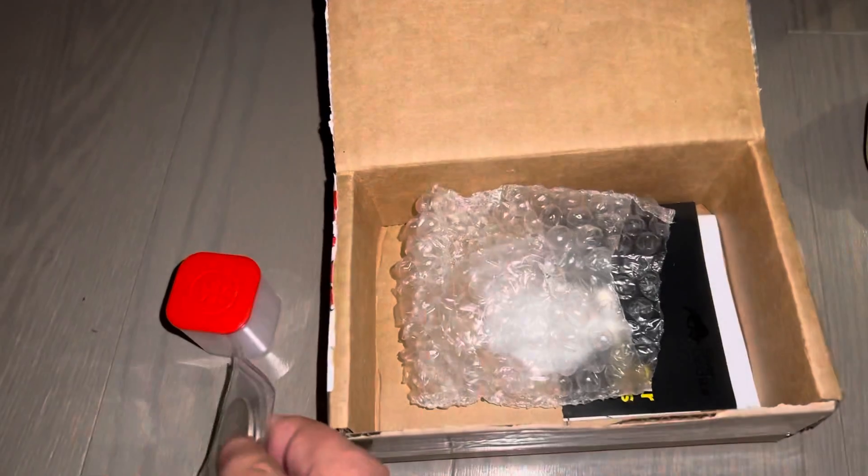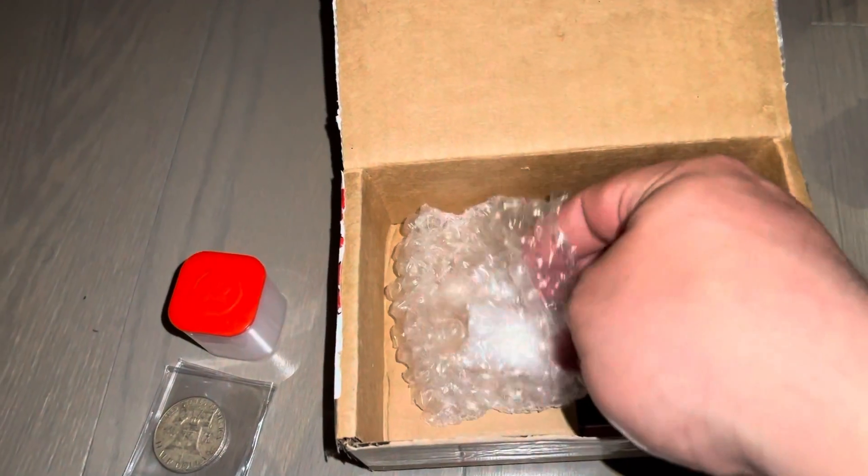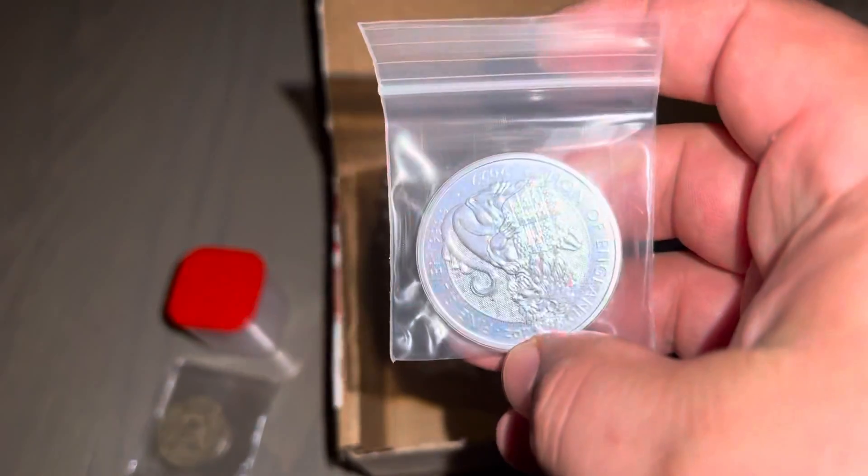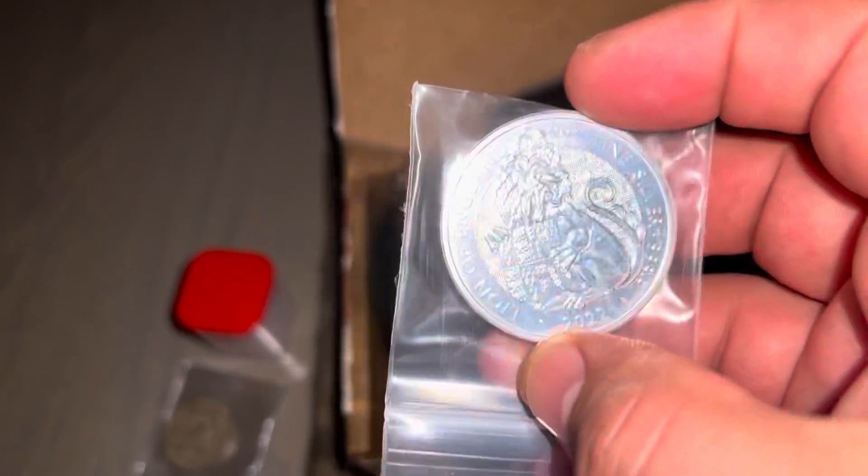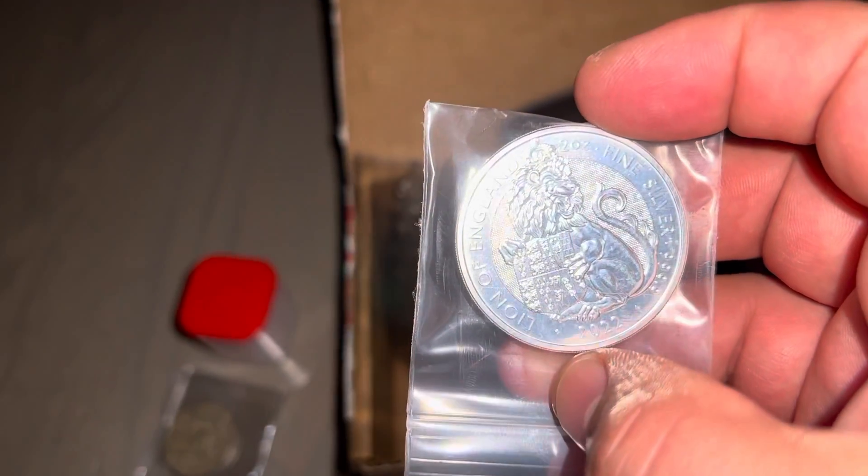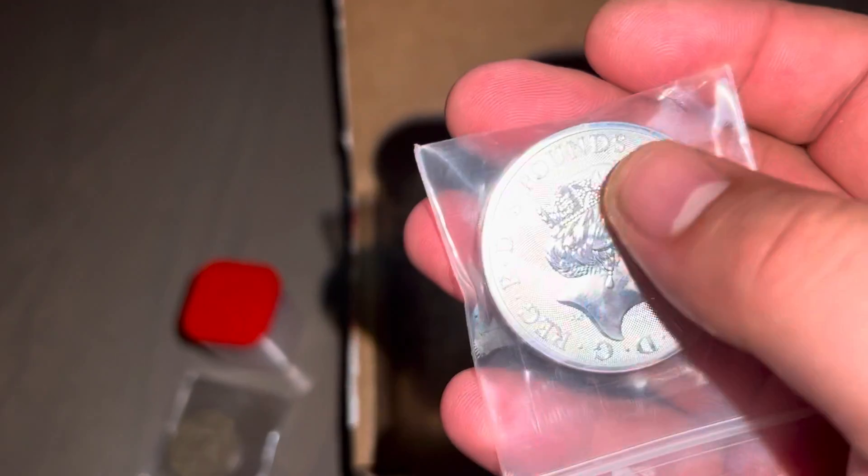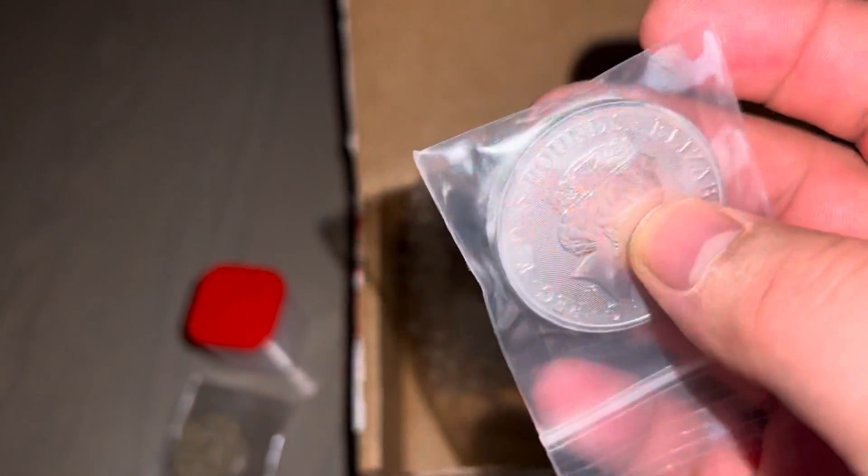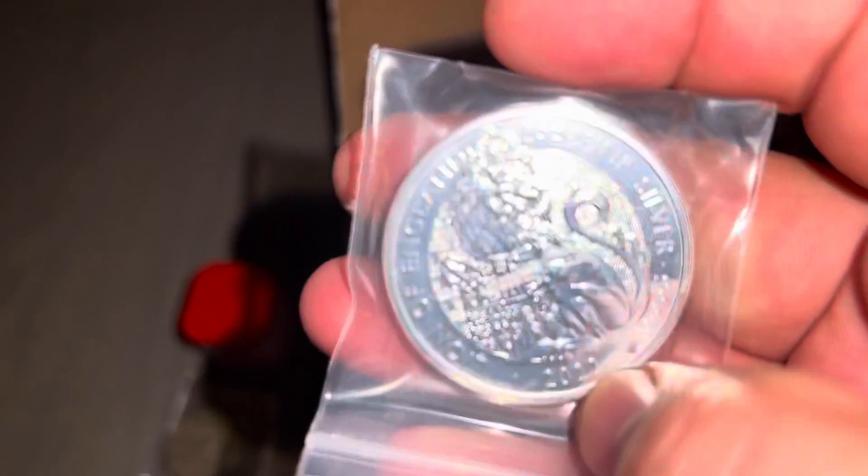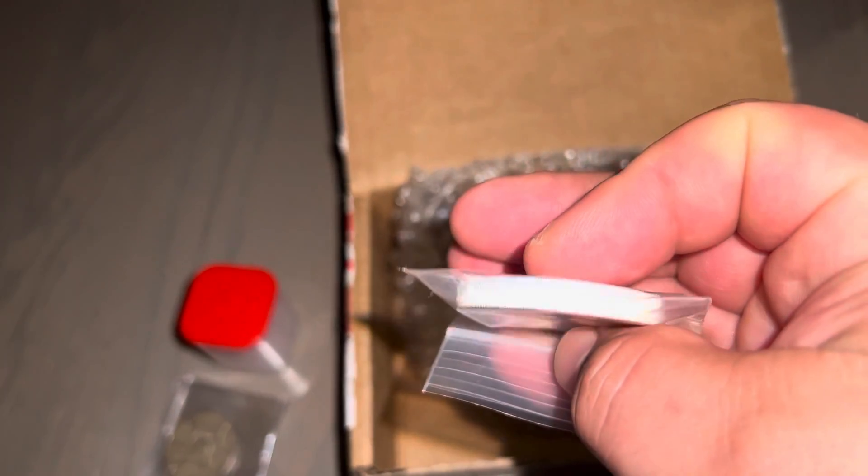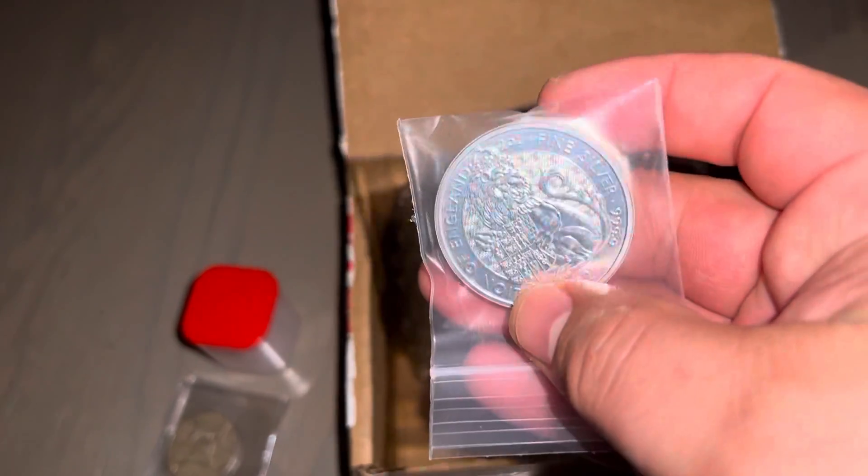I got here a two ounce Queen's Beast Tudor, or it's not Queen's Beast I guess, it's the Tudor line of England. It's very chunky thick coin, nice security feature, five pound face value with our favorite Queen on the back. It's very beautiful.